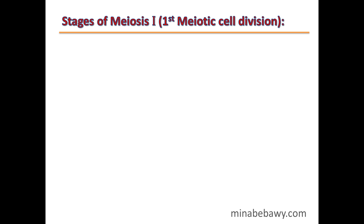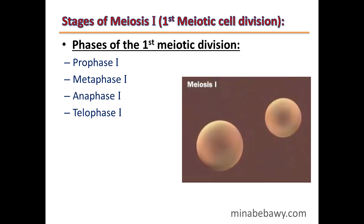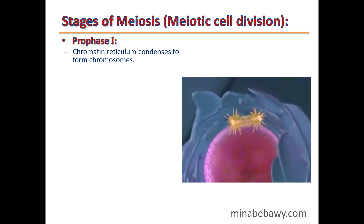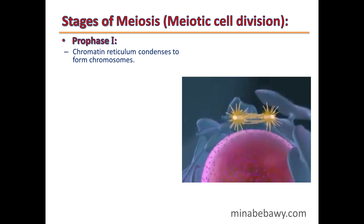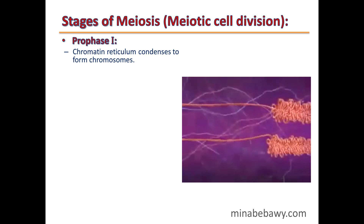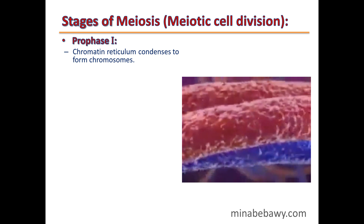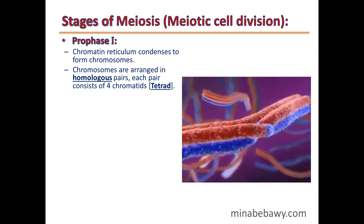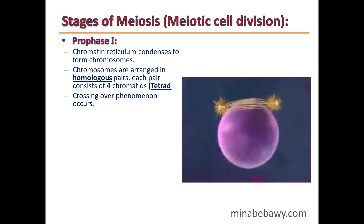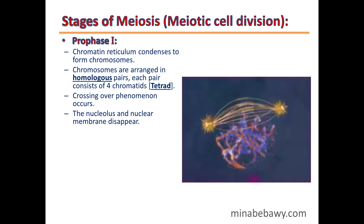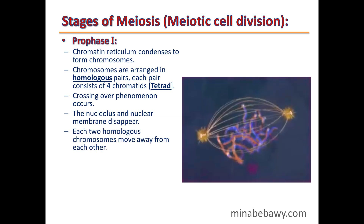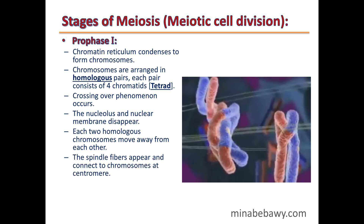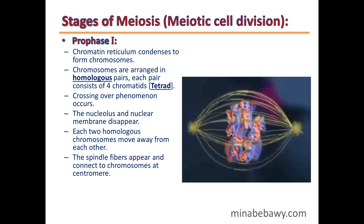In the first meiotic division, prophase 1: chromatin reticulum condenses to form chromosomes. Chromosomes are arranged in homologous pairs, each pair consisting of four chromatids or tetrads. The crossing over phenomenon occurs. The nucleolus and nuclear membrane disappear. Each two homologous chromosomes move away from each other, and spindle fibers appear and connect to chromosomes at the centromere.